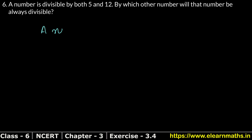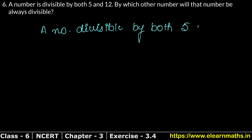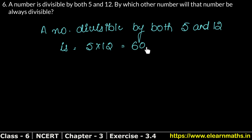See, a number divisible by both 5 and 12 — the number will be divisible by both 5 and 12. Now, we have to know which other numbers it is divisible by. So if we take out the factors, we will know who it is divisible by.